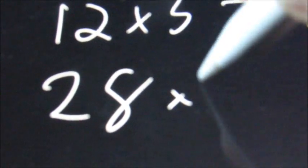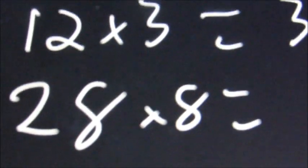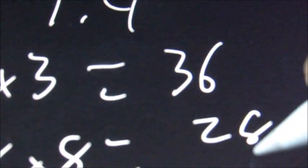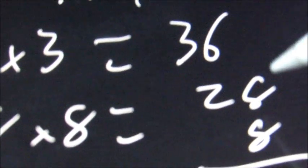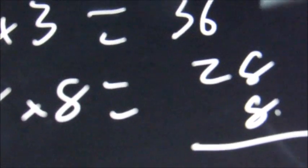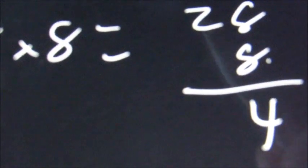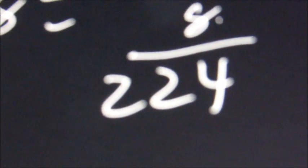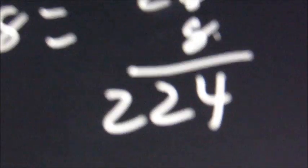If we have something like 28 times 8, the easy way to do these is, again, do it vertically. So we're going to say 28 times 8. And here we're going to multiply the bottom times the top. So it's going to be 8 times 8 is 64. Carry the 6. 8 times 2 is 16, plus 6 is 22. So the answer here would be 224.